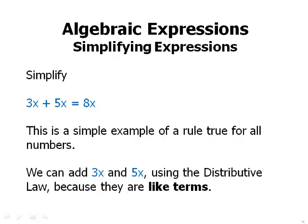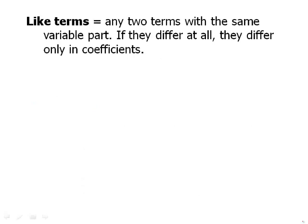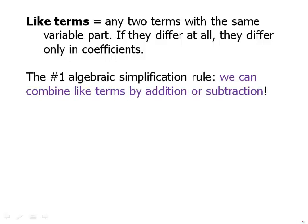Now what do we mean by like terms? Like terms are any two terms with the same variable part. If they differ at all, they differ only in coefficients. The number one algebraic simplification rule: we can combine like terms by addition or subtraction. And in essence we're just adding or subtracting the coefficients.